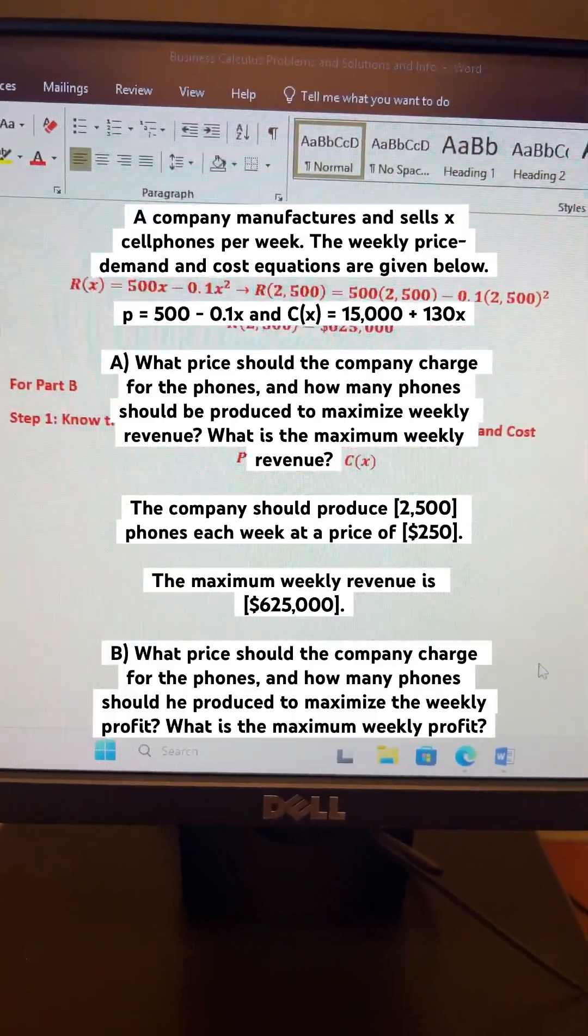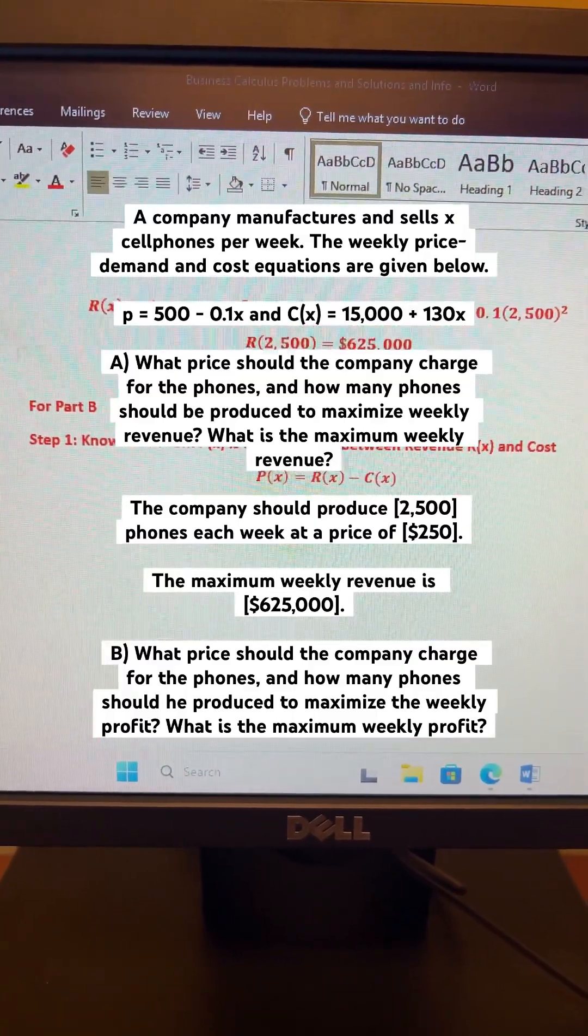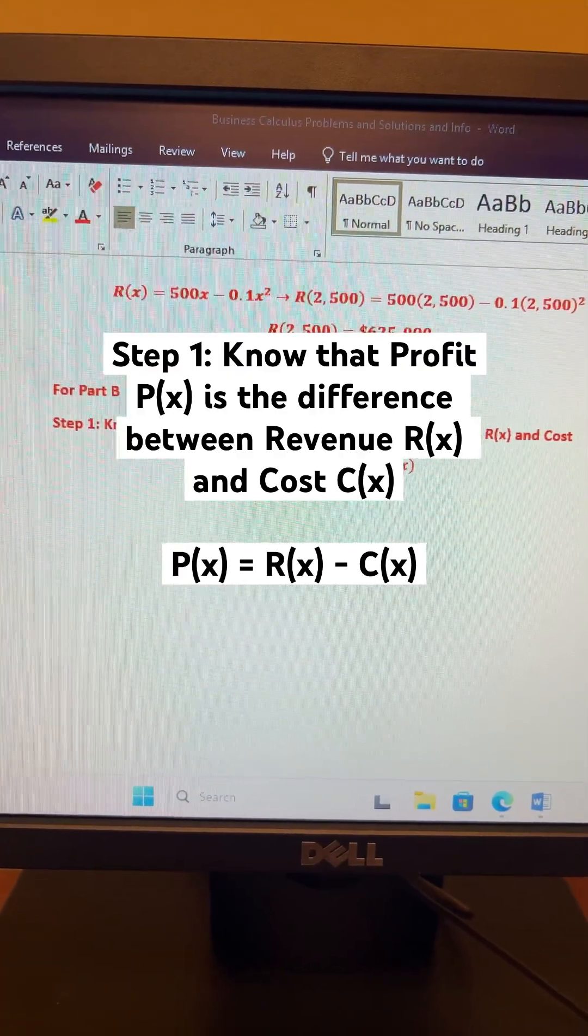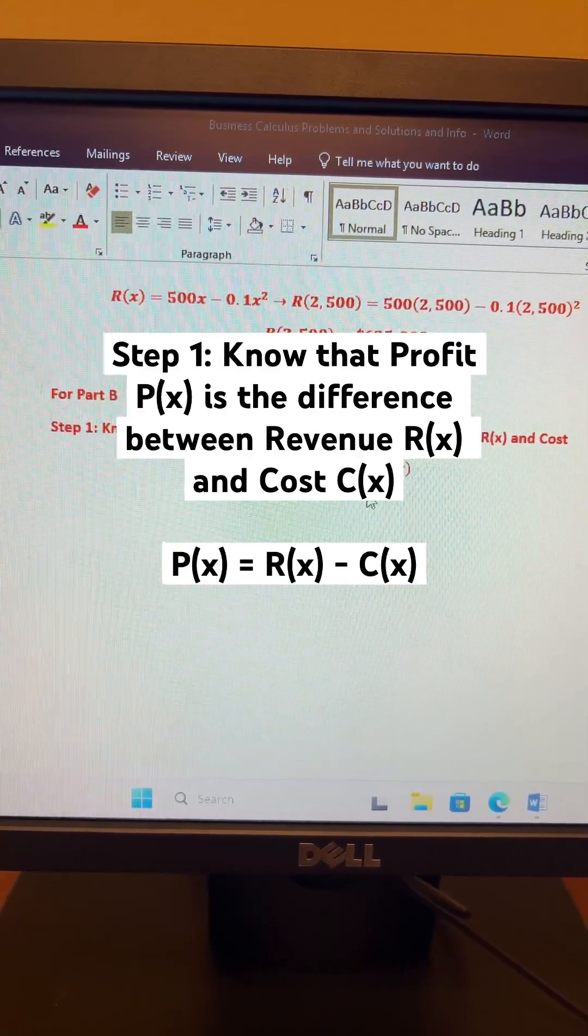Alright, for part B, the first step is to know that profit is the difference between revenue and cost. That is, P(x) is equal to R(x) minus C(x).